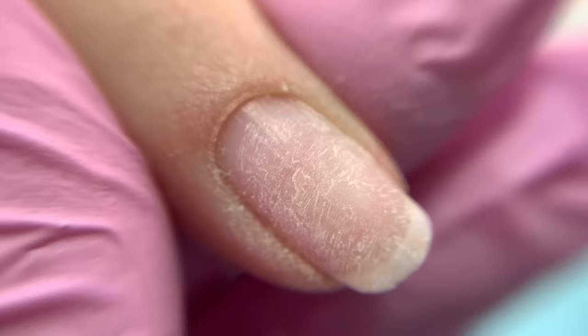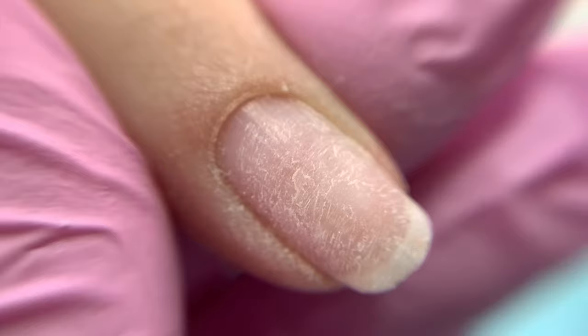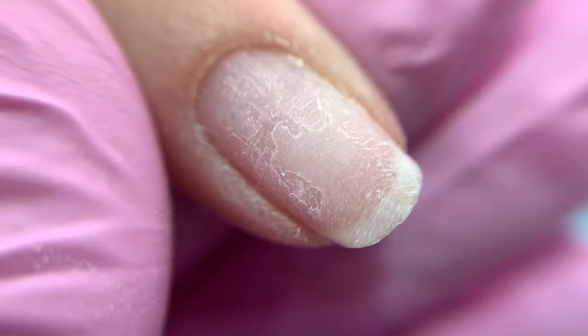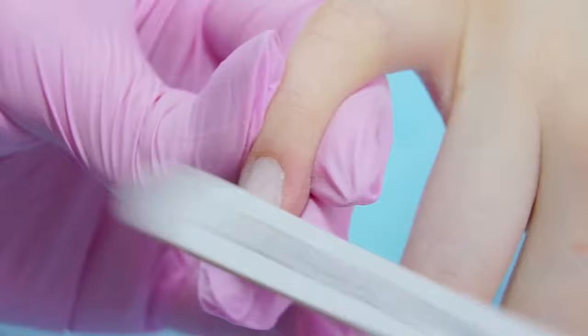You can leave a thin layer of the base coat instead of completely taking it off. If the base coat is crumbling and peeling a lot, you should take it off completely using a nail file or a remover.